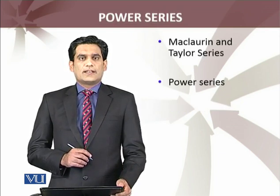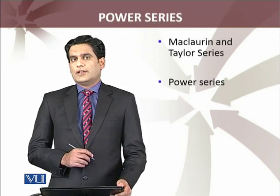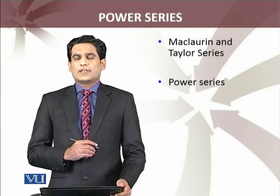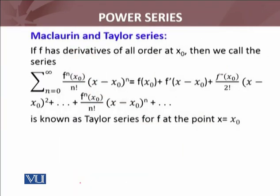I will give you the definition of the power series. McLaurin and Taylor series: if f has derivatives of all orders at x naught, then we call the series summation n equals 0 to infinity of the nth derivative — when n equals 0 we get the function itself, when n equals 1 we get the first derivative, and so on — that is, f^(n)(x naught) divided by n factorial, times x minus x naught raised to power n.